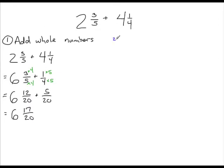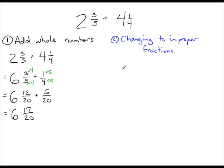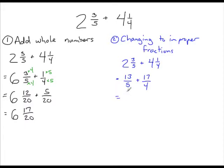Another way you could add these two mixed numbers is by changing them into improper fractions. Let's write the question again: 2 and 3 fifths plus 4 and 1 quarter. We need to change both into improper fractions. So 5 times 2 is 10, plus 3 gives us 13 over 5, plus 4 times 4 is 16, plus 1 is 17 over 4.